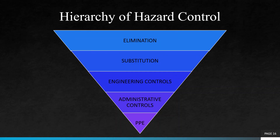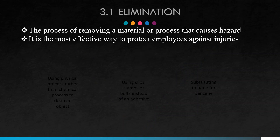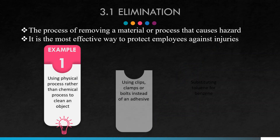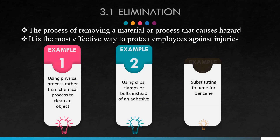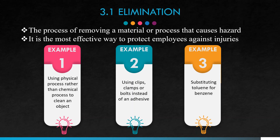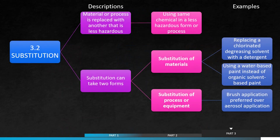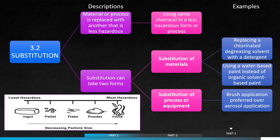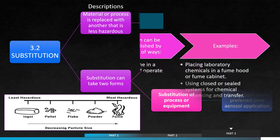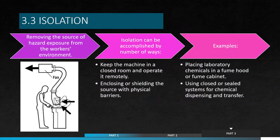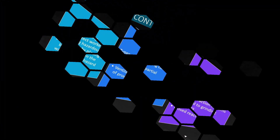In Part 3, we will explore the control measures under Regulation 15. This will be the hierarchy of hazard control. The elimination process comes first. Hazard substitution is a hazard control strategy in which a material or process is replaced with another that is less hazardous. The isolation process is simply removing the source of hazard exposure from the worker's environment.